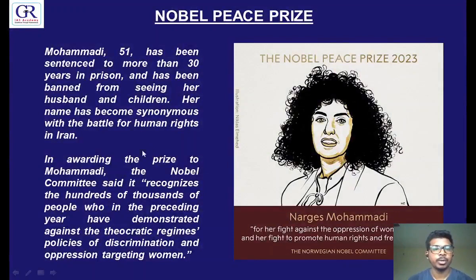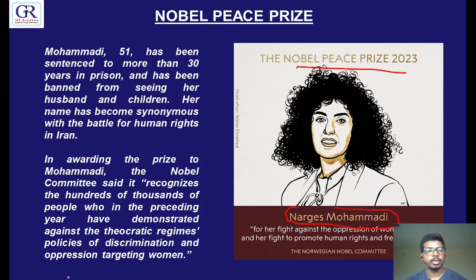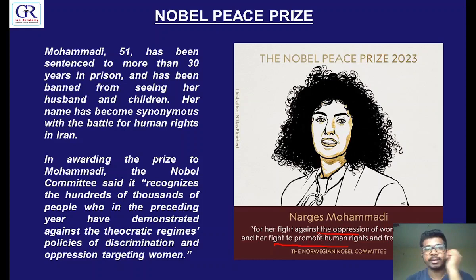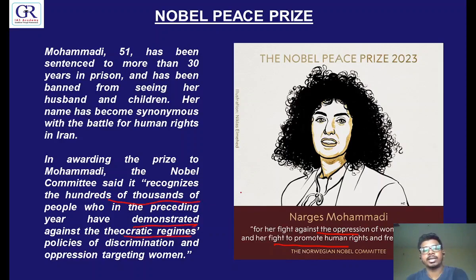The Nobel Peace Prize can also be used in essay. The Nobel Peace Prize in 2023 was given to Nargis Mohammadi of Iran, for her fight against the oppression of women in Iran and her fight to promote human rights and freedoms for all. She has been fighting in Iran for human rights for over 30 years. Iran is a theocratic region — it is an Islamic Republic, a very oppressive country for women with very severe rules, and Sharia is imposed on everyone. Recognizing her hard work and the thousands of people like her who are demonstrating against the theocratic regime, she has been recognized with the Nobel Peace Prize.